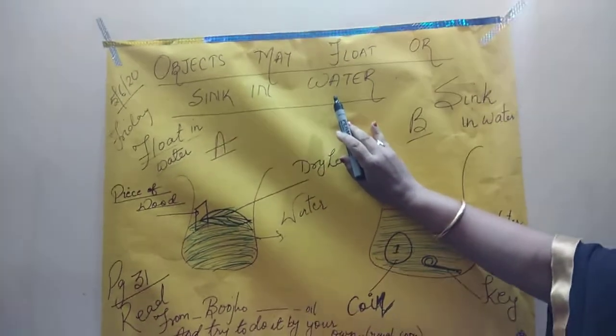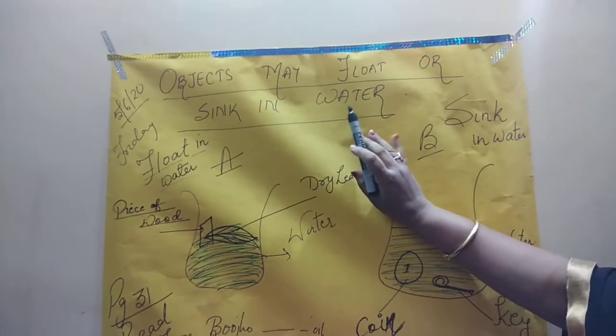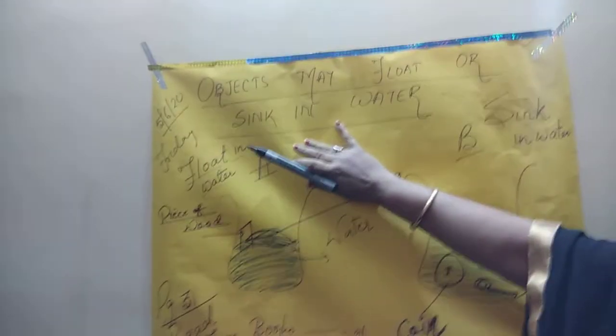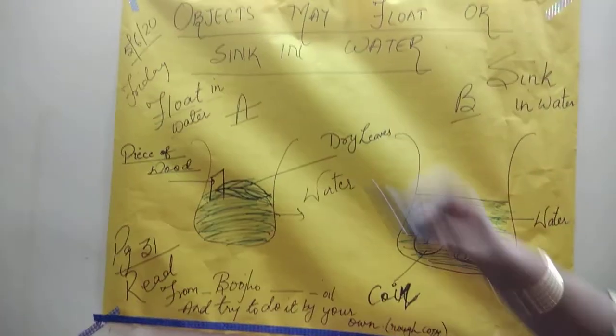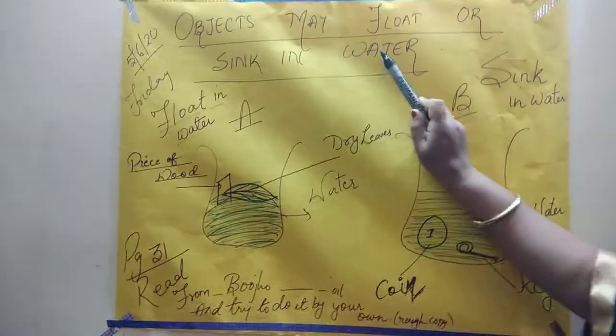Because the other word water we have used, so we have taken the liquid as water. An object that sinks means what children? The thing which is heavier than water.